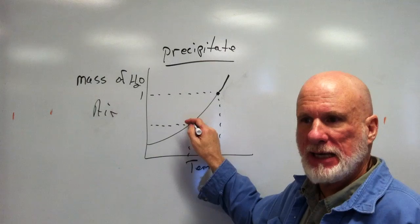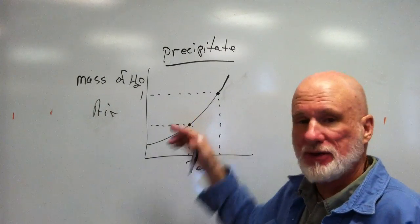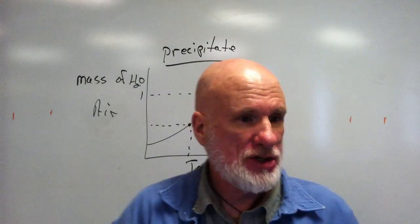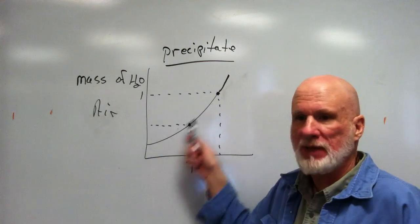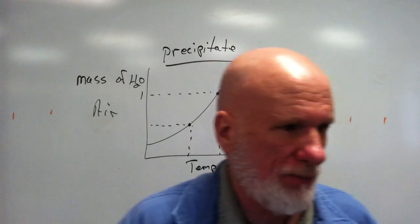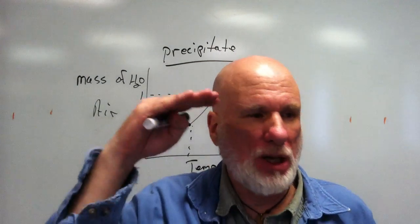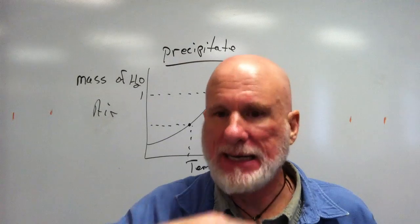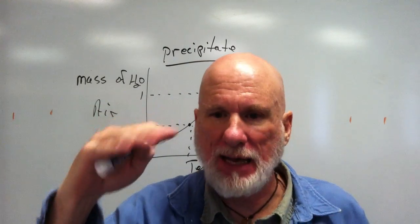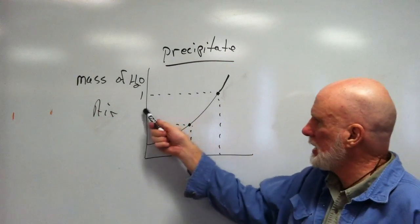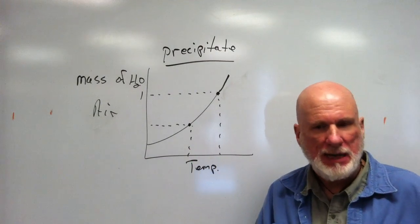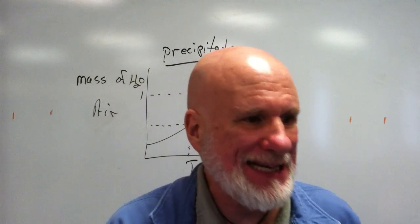So anything below, anything above this line that was dissolved is going to come out of solution. So this is actually kind of like the saturation line. It's kind of a saturation graph, where below that line I can dissolve water. But anything above that line, anything that was here is going to come out of solution and form dew.